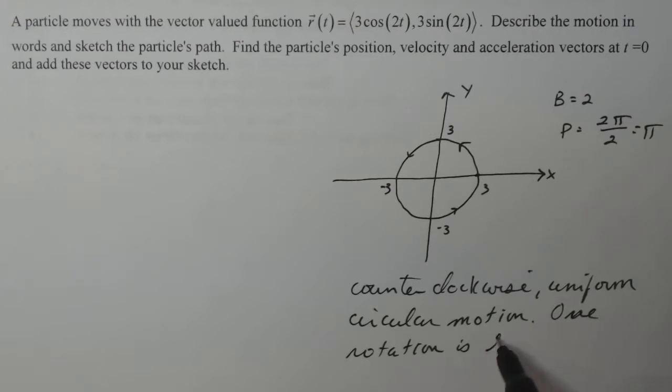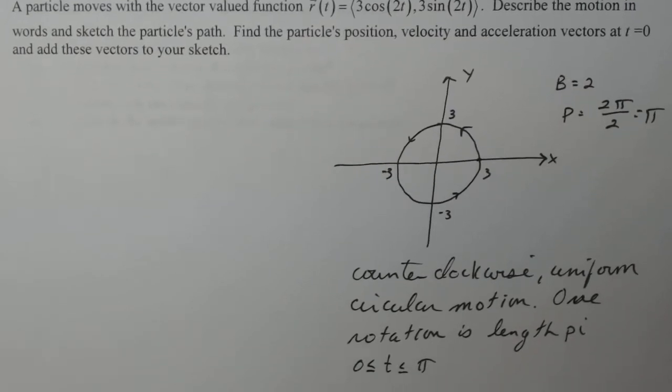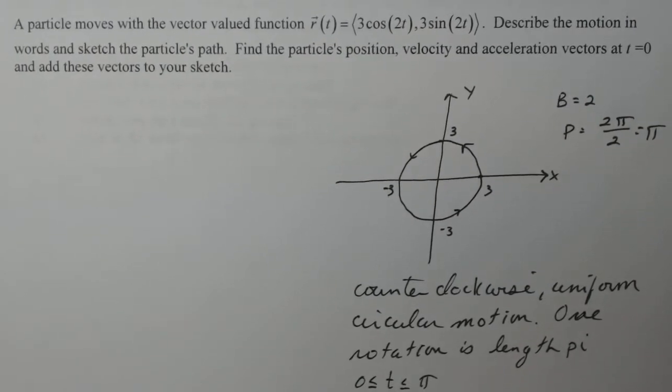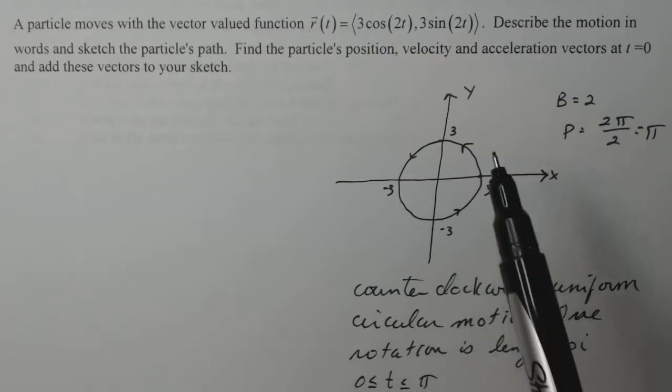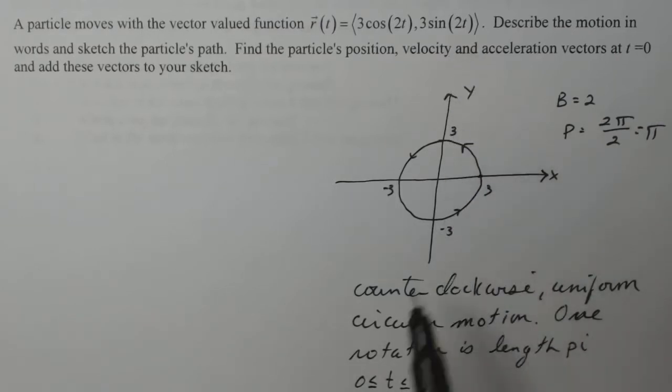So the time that it takes to go around one time is going to be pi. So one rotation is length pi, and that means that t will go between zero and pi for one rotation. Now it didn't say to do that, but that's a nice reminder of what that two does for us in this problem.